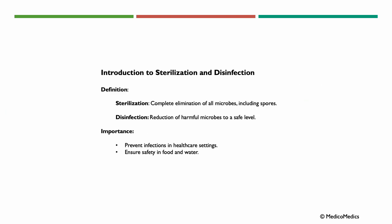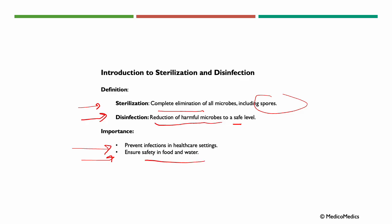Sterilization means the complete elimination of all microbes, including spores, while disinfection is the reduction of harmful microbes to a safe level. The importance here is to prevent infections in healthcare settings and to ensure safety in food and water. Sterilization removes all microbes, while disinfection makes things safe by essentially reducing their number.